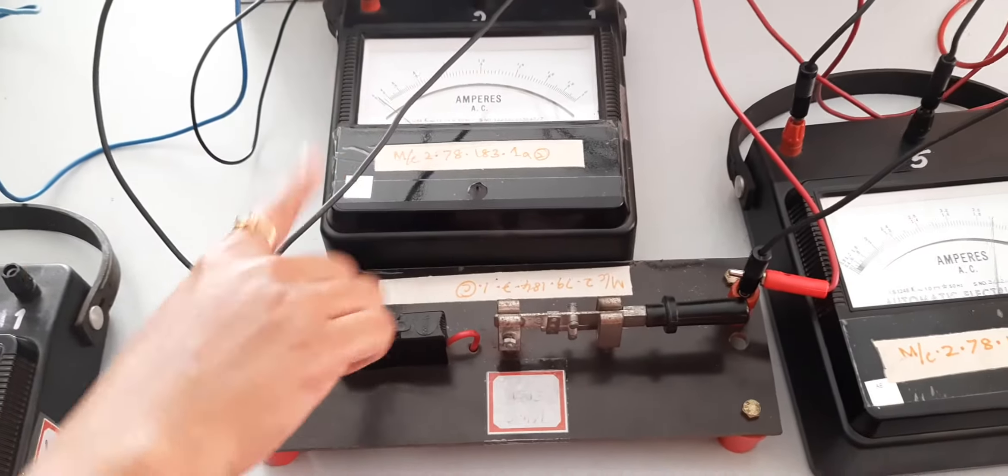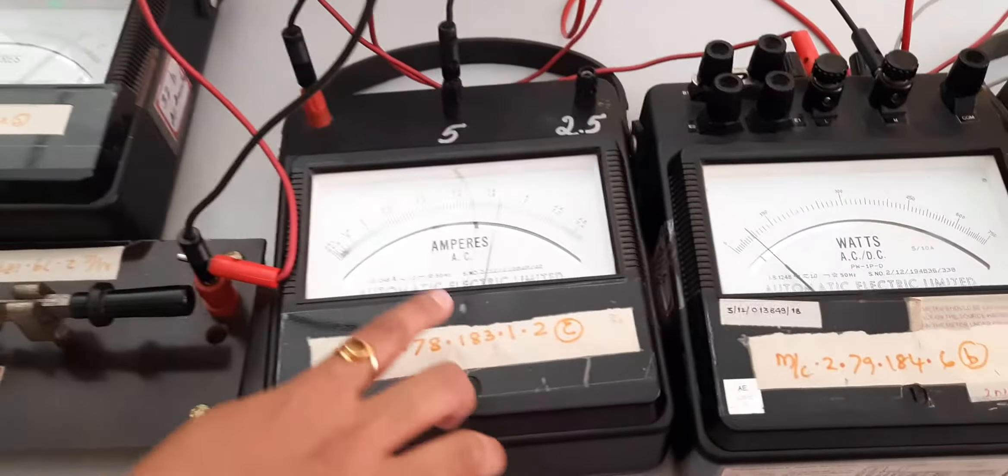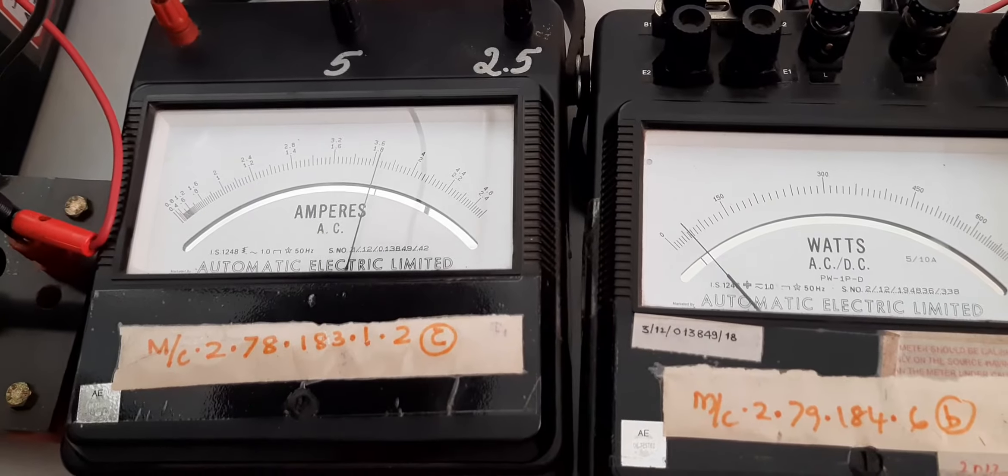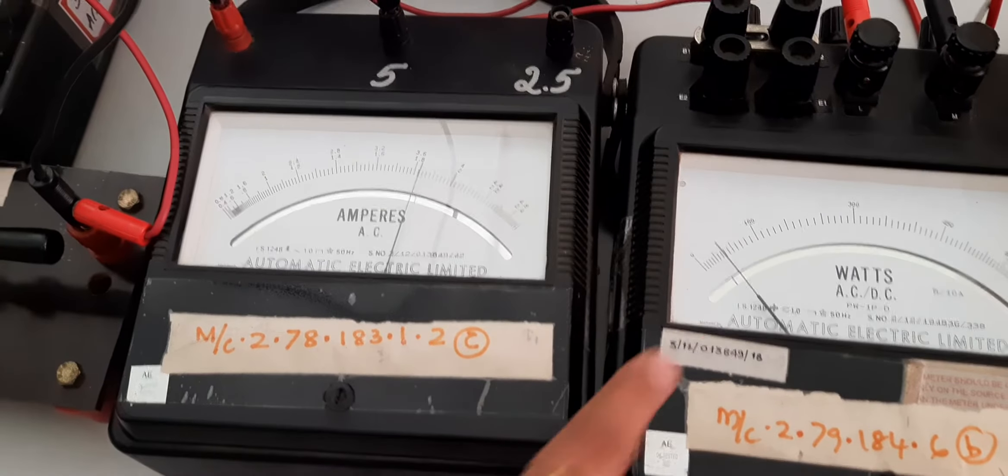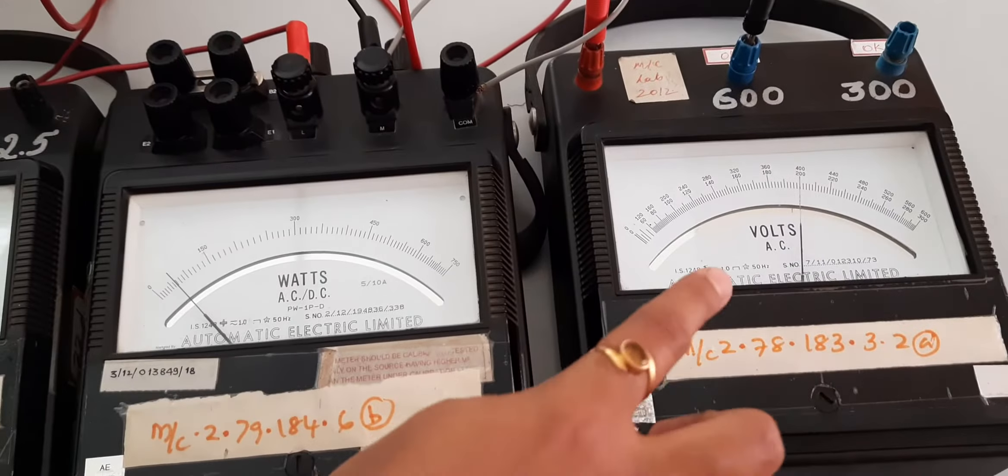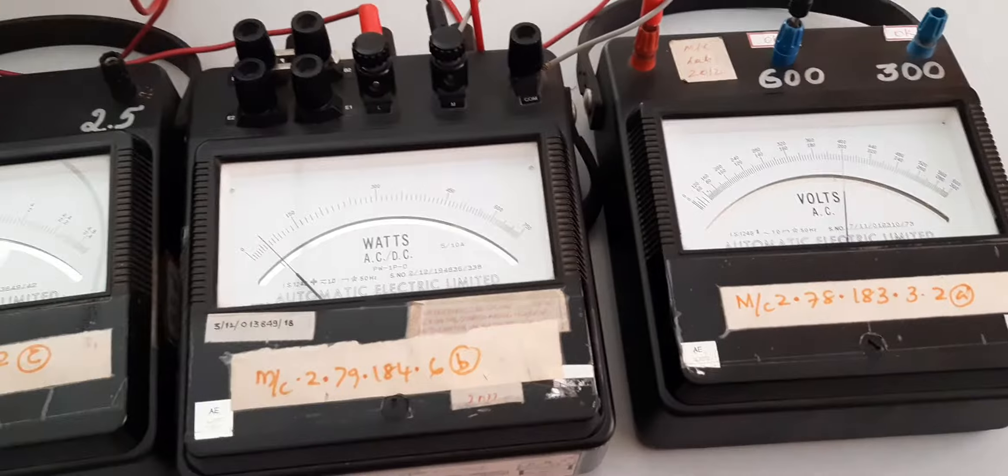This will be taken later. The initial armature current is around 3.7 amps. This is the watt meter reading which reads around 40 and this is the volt meter which will give you 400. This will remain constant.